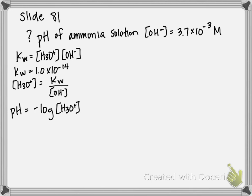They're asking us, what is the pH of an ammonia solution with a hydroxide concentration of 3.7 times 10 to the negative 3 molar? Obviously, to calculate pH, we need to have concentration of hydronium, not hydroxide.